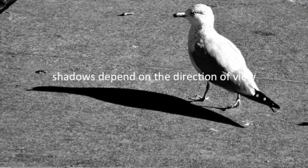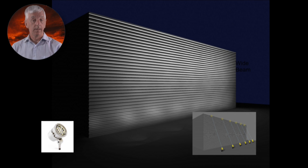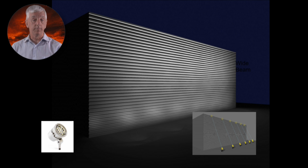The fundamental lesson about shadows is that they depend on the direction of view relative to the light source. Here are shadows of the ducts because the sun is coming from the opposite direction to the camera. Lighting this wall from a distance with spotlights will create shadows because the spotlight is coming from below and we are looking horizontally toward it.